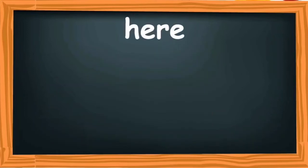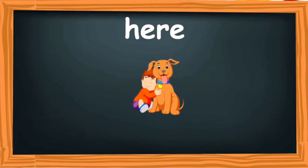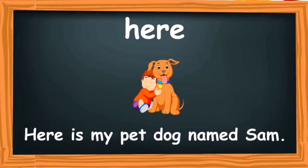The word is 'here.' Children, please look at the word and read it — the word is 'here.' The word 'here' is used to draw attention to something or to refer to a nearby place as well. Let's see an image and then we will make a sentence with the word 'here.' You can see a cute little boy along with a dog. The sentence says: 'Here is my pet dog named Sam.' The boy is saying, here is my pet dog named Sam — the name of the dog is Sam, and as the dog is next to the boy, that's why he is using the word 'here.'